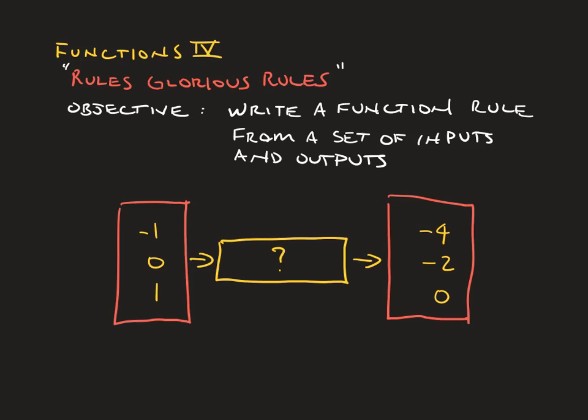For example, in the table below, we have inputs and outputs, but we're missing the rule. And so somehow, some way, we're going to need a strategy to figure out a mathematical rule that joins these inputs and outputs.